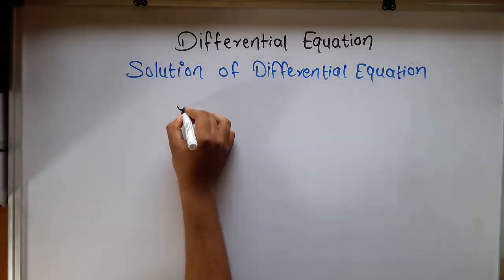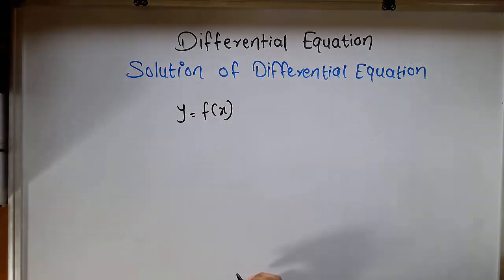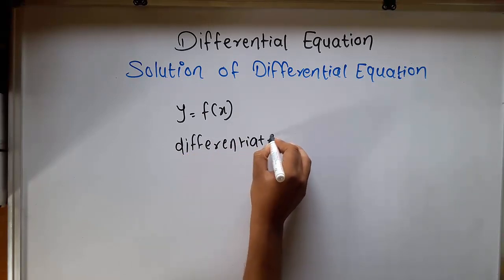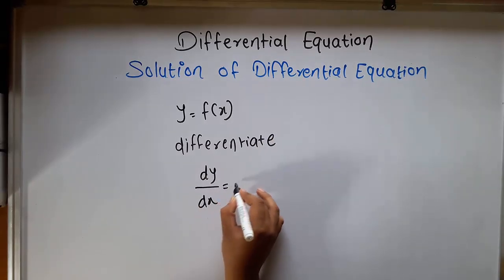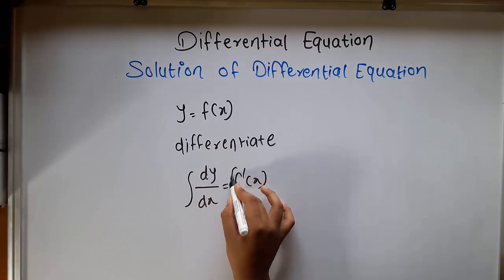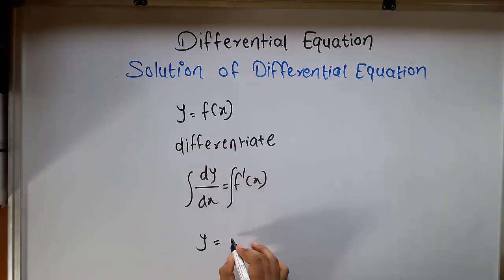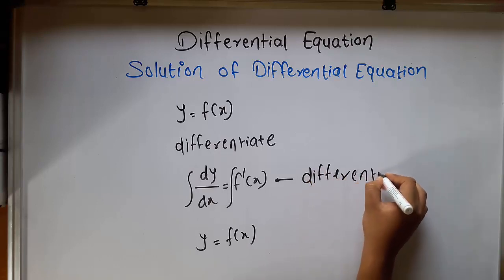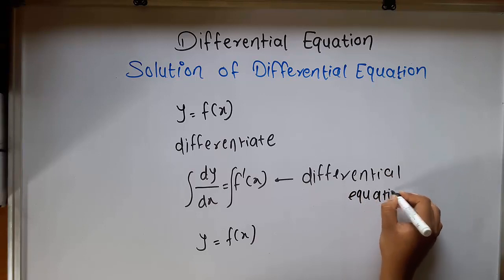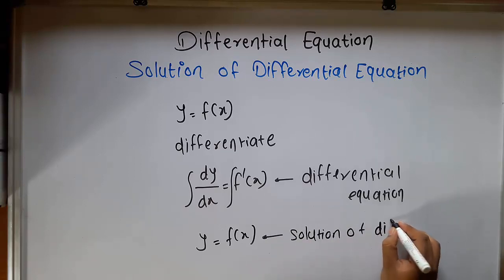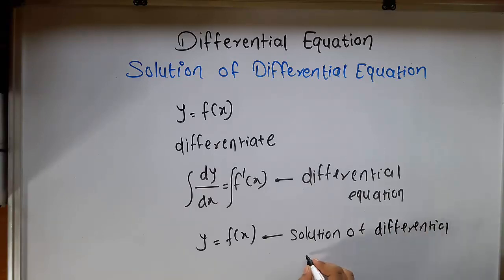If we get y equal to f of x, it's a simple equation. If I differentiate this equation, it forms dy by dx equal to f dash of x. Now if I integrate this equation, it gives y equal to f of x. This equation we call as a differential equation, and y equal to f of x is called the solution of the differential equation.